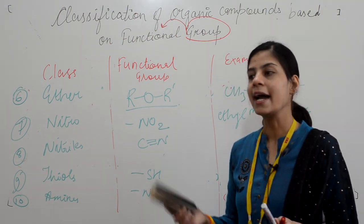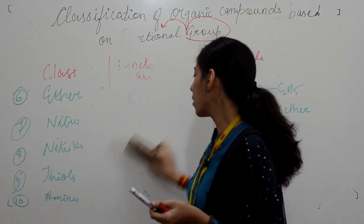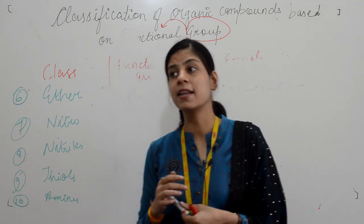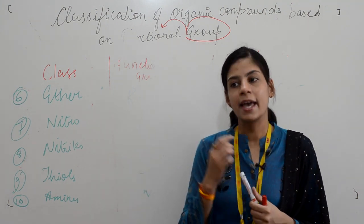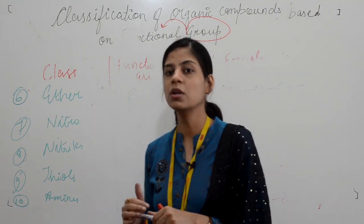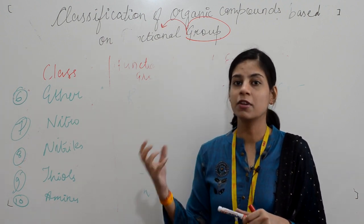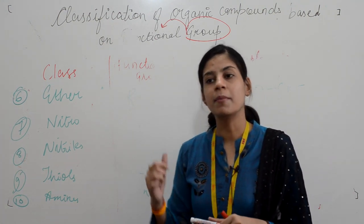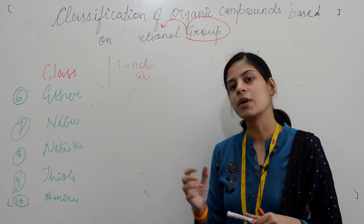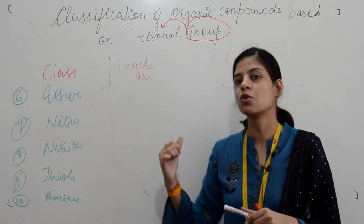These are some of the important functional groups you will encounter while studying nomenclature. It is very important to know the functional groups and their classes. If we sum up this topic: functional group is very important in organic chemistry — it is said to be the heart of organic chemistry. Every functional group has its characteristic chemical reaction, and by locating that functional group in the molecule, we can predict the type of reaction that molecule may undergo.